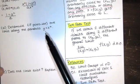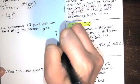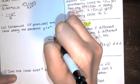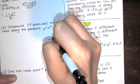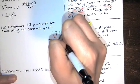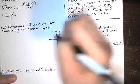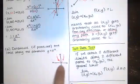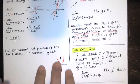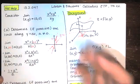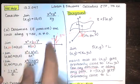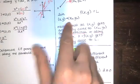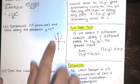Now they say determine if possible the limit along the parabola y = x². Again, we're looking at the limit as (x, y) approaches (0, 0), but this time approaching along the path y = x². Notice they picked a path that passes through (0, 0) — that's very important. A lot of students ask, why can't I evaluate this at y = 3? You can, but the path y = 3 is a horizontal line that doesn't pass through (0, 0). You need to pick a path that passes through the point (x₀, y₀), which here is (0, 0).